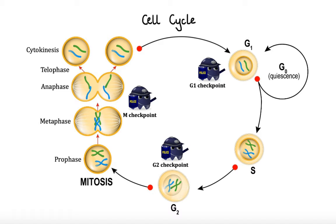Many types of cancer are caused by mutations in tumor suppressor genes that allow the cells to speed through the various checkpoints or even skip them altogether. One of the common approaches in treatment of cancer is to use chemotherapy agents that target fast-dividing cells at different phases of the cell cycle. Drugs that are cytotoxic during a specific phase of the cell cycle are referred to as cell cycle specific drugs, while drugs that are cytotoxic in any phase are referred to as cell cycle non-specific drugs.